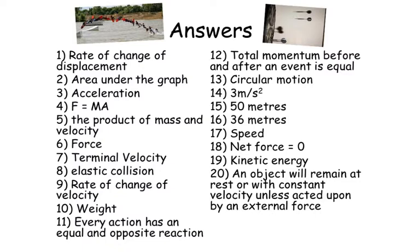Number 9: rate of change of velocity. Number 10: weight. Number 11: every action has an equal and opposite reaction. Number 12: total momentum before and after an event is equal. Number 13: circular motion. Number 14: 3 metres per second squared. Number 15: 50 metres. Number 16: 36 metres. Number 17: speed. Number 18: net force is zero. Number 19: kinetic energy. Number 20: an object will remain at rest or with constant velocity unless acted upon by an external force. How well did you do? Okay, bye for now.